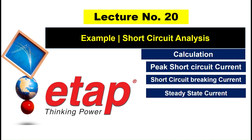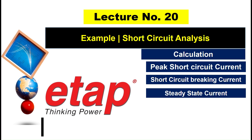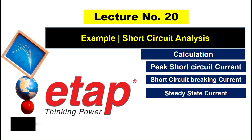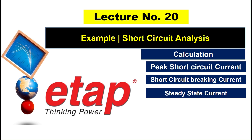Hello friends, welcome to Electrical Design Engineering YouTube channel. Today is our lecture number 20. In the previous lecture, that is lecture number 19, we have studied about the initial symmetrical short circuit current — how to calculate it. We used Excel and hand calculation. Now in today's lecture we will take the same example and calculate the peak short circuit current, short circuit breaking current, and steady state current. Before starting, please subscribe to the channel, like the video, and share on your social media profiles.